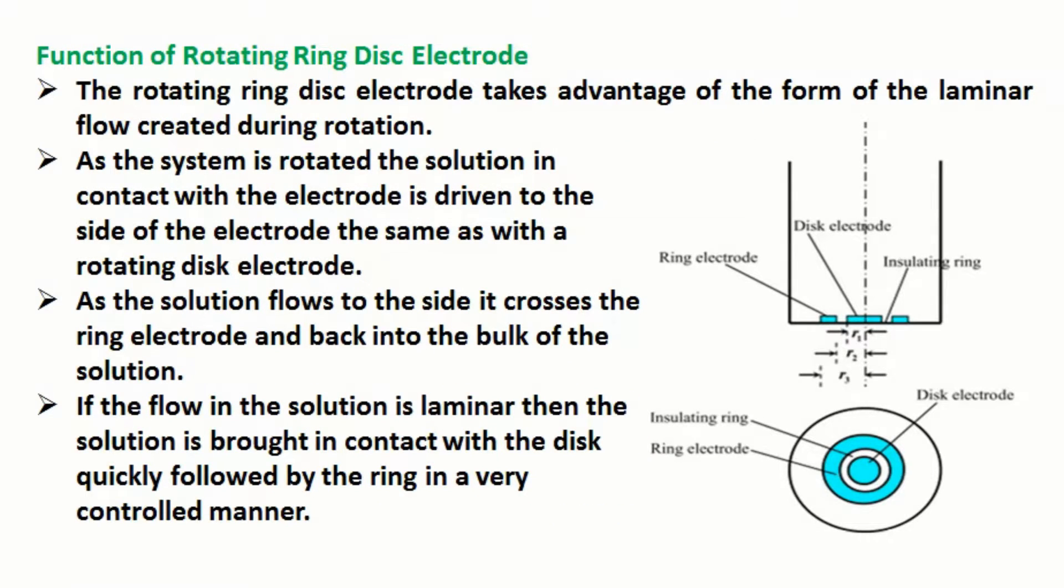Function of rotating ring disc electrode: The rotating ring disc electrode takes advantage of the form of the laminar flow created during rotation. As the system is rotated the solution in contact with the electrode is driven to the side of the electrode, the same as with a rotating disc electrode. As the solution flows to the side it crosses the ring electrode and back into the bulk of the solution.